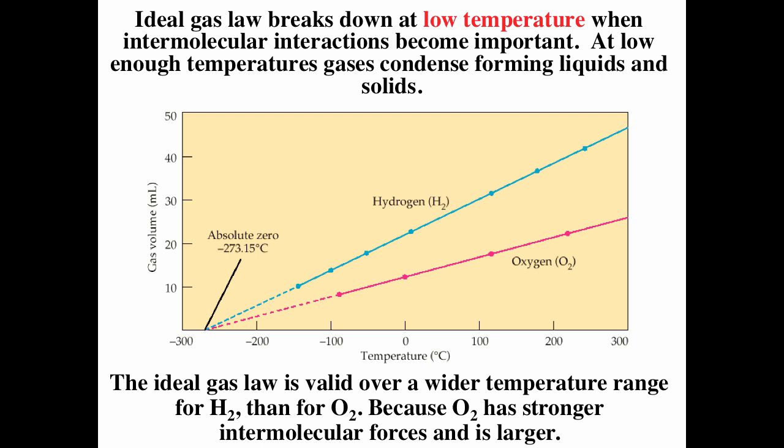It's kind of interesting — if you cool a gas down, the volume obviously decreases. Eventually it will stop behaving ideally, and eventually the gas will condense. So for an ideal gas, the volume at zero Kelvin is zero. But all gases will stop behaving ideally before you get down to zero Kelvin.